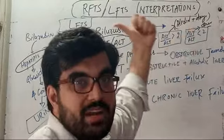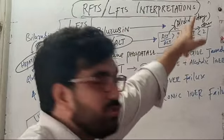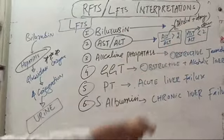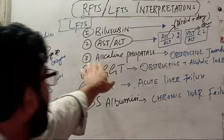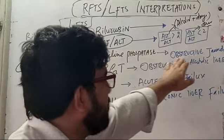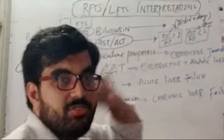To summarize: AST to ALT ratio of two or more than two indicates alcohol or drug-induced hepatitis. Less than two indicates all other causes. Alkaline phosphatase is raised in obstructive jaundice.